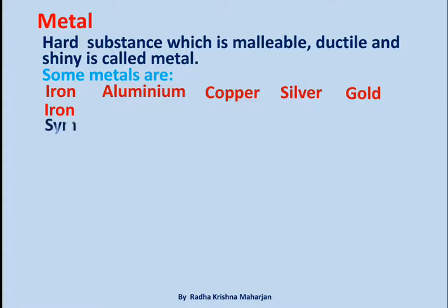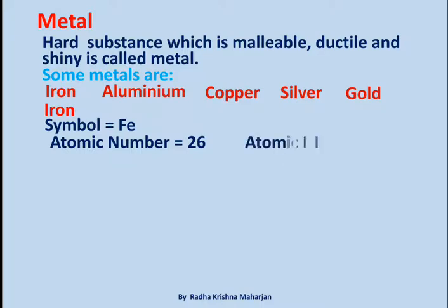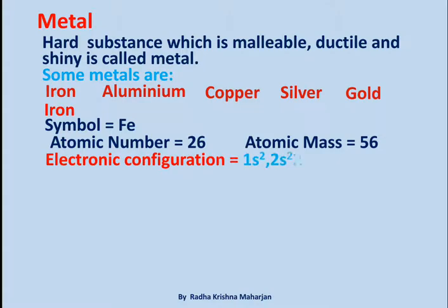Iron: Symbol Fe, Atomic Number 26, Atomic Mass 56. Electronic Configuration: 1s2 2s2 2p6 3s2 3p6 3d6 4s2.